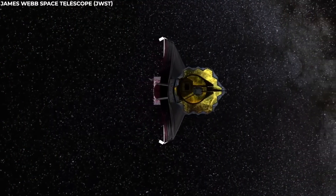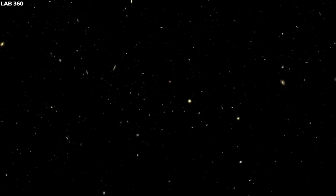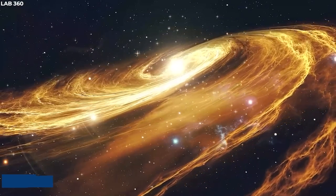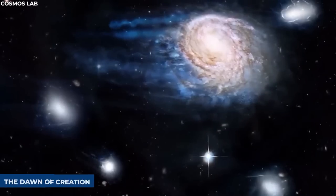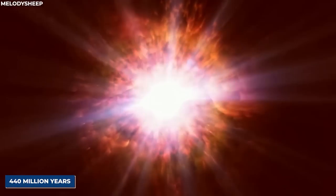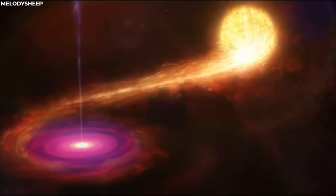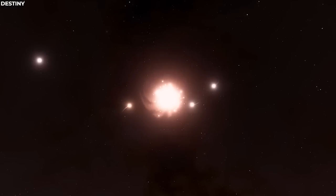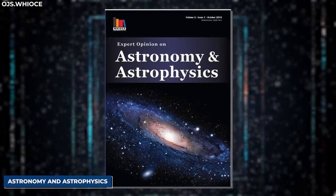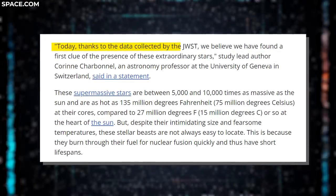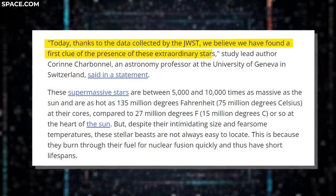Just last week, the JWST unearthed a groundbreaking clue, a revelation that millions of supermassive stars, colossal in size and up to 10,000 times the mass of our Sun, may have existed at the dawn of creation. Born a mere 440 million years after the resounding Big Bang, these stellar behemoths possess the potential to shed light on the cosmic process of heavy element synthesis. Researchers referring to these colossal stars as celestial monsters have published their remarkable findings in the esteemed journal Astronomy and Astrophysics. Today, thanks to the data collected by the JWST, we believe we have found a first clue of the presence of these extraordinary stars, exclaimed Corinne Charbonnel, an esteemed astronomy professor at the University of Geneva in Switzerland and the lead author of the study. The implications of this finding are profound.